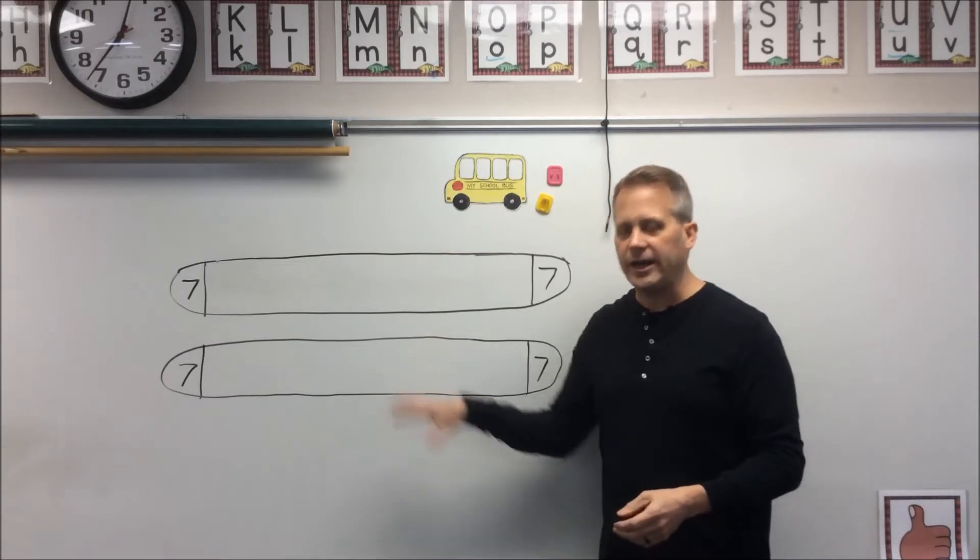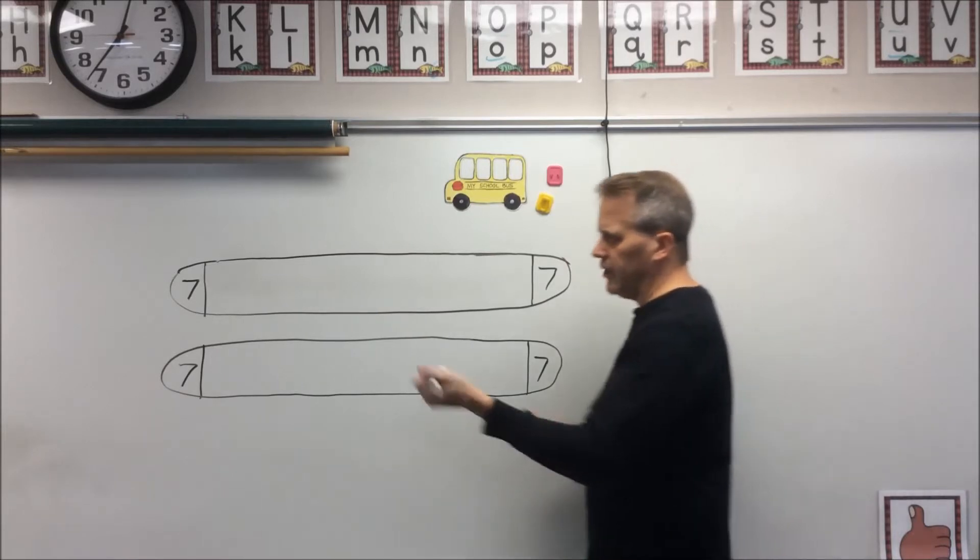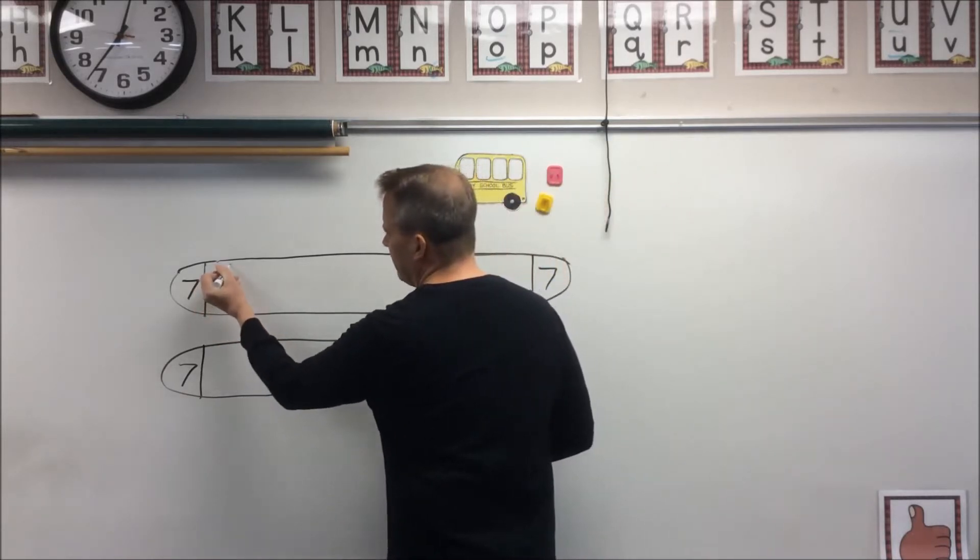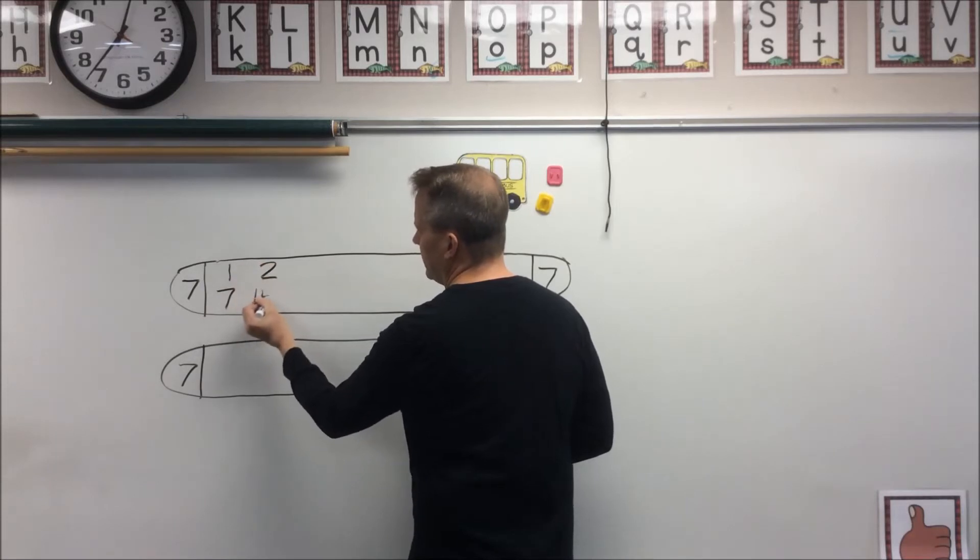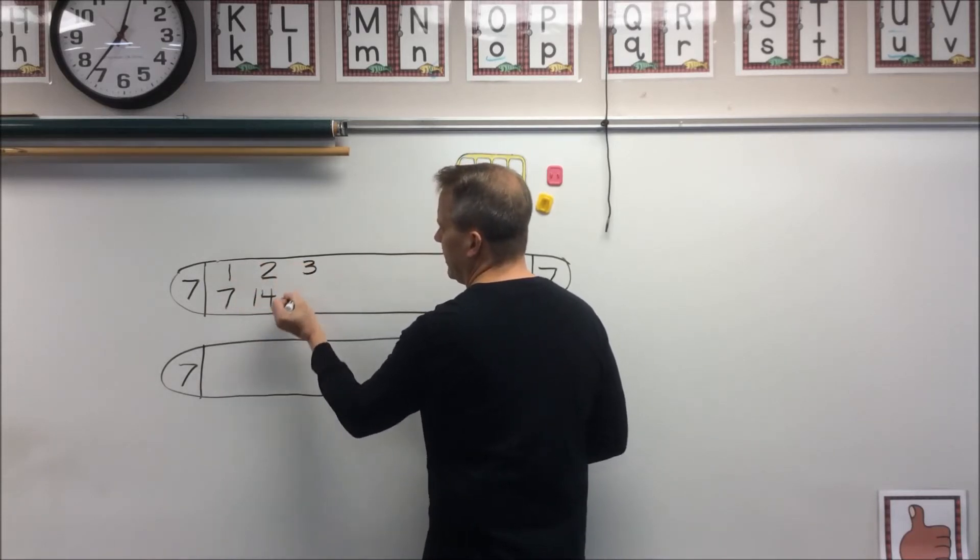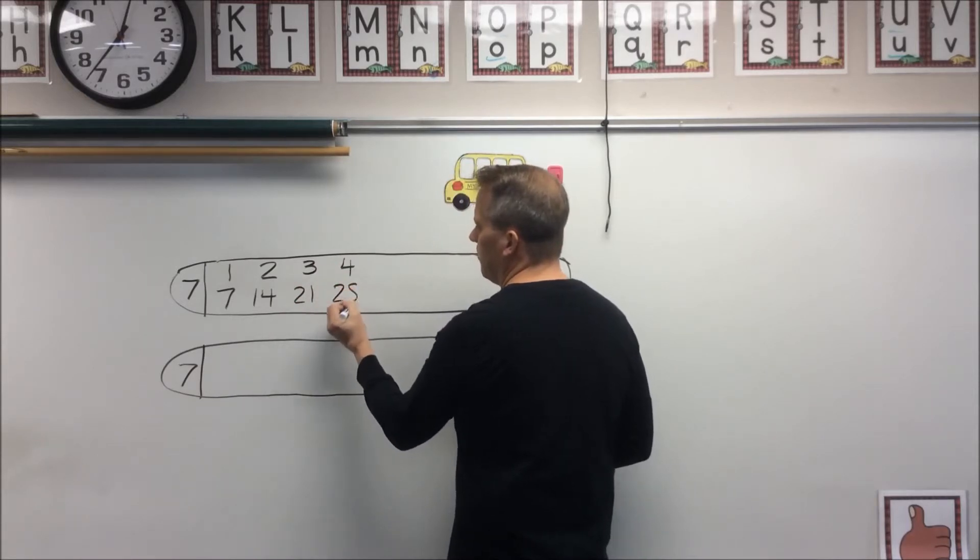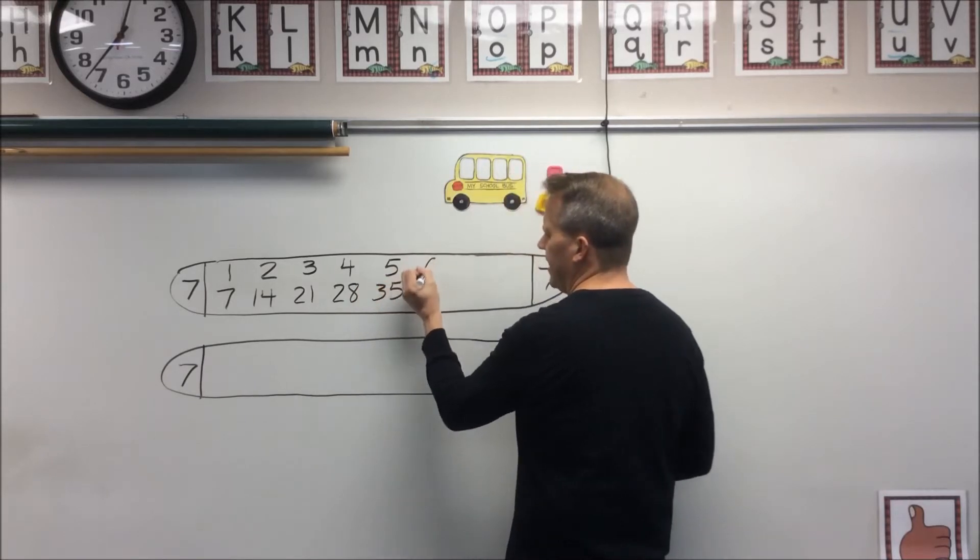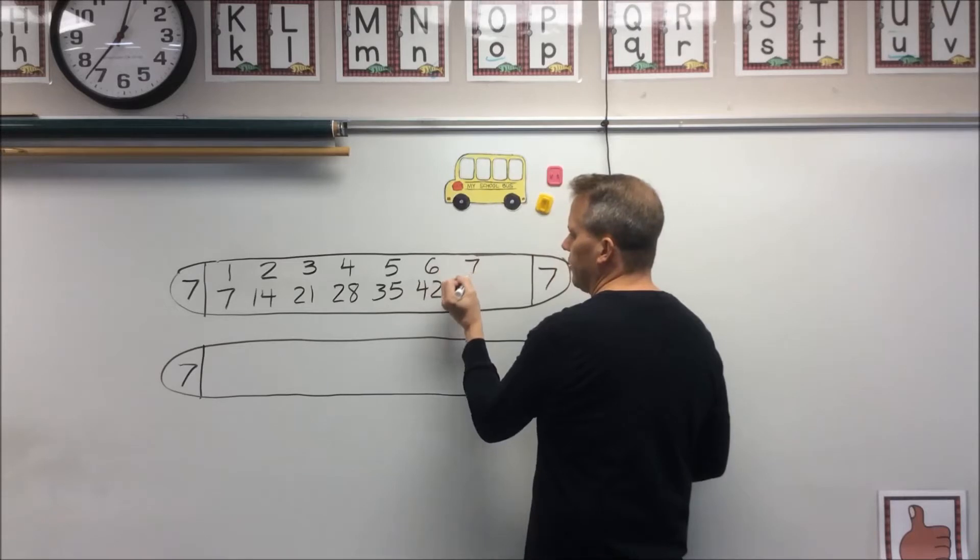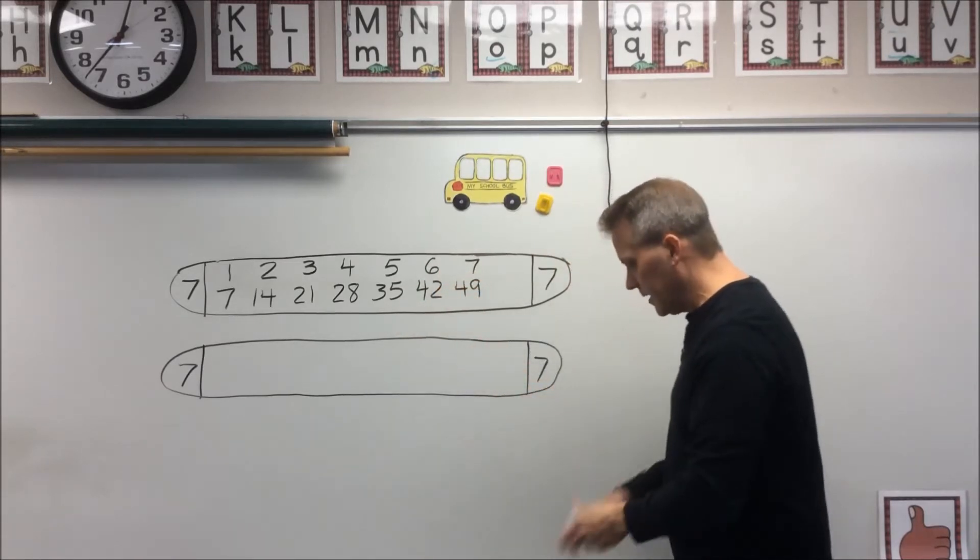I do recommend using a marker when you write your answers on the popsicle sticks. So, for example, seven times one is seven, seven times two is 14, seven times three is 21. If I keep writing out my multiplication facts, I'm going to notice that these numbers will get really squished together.